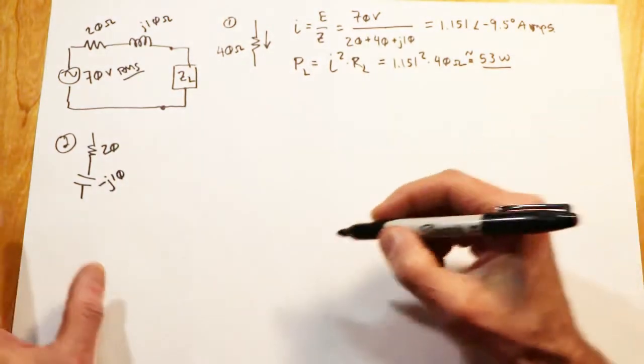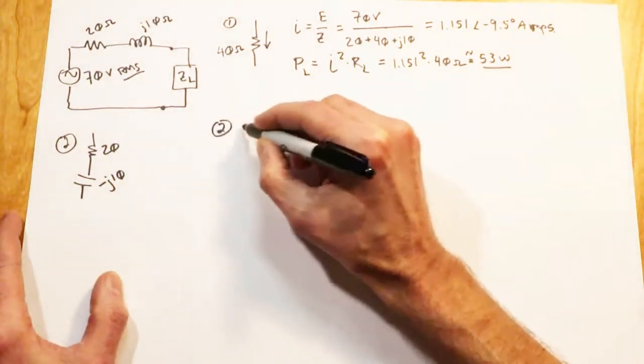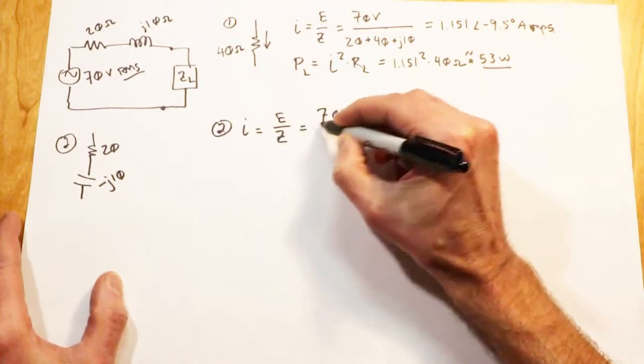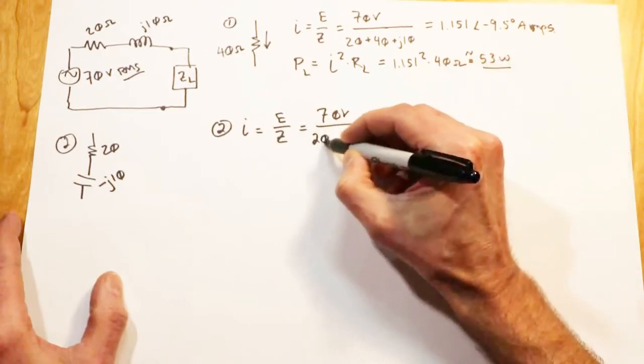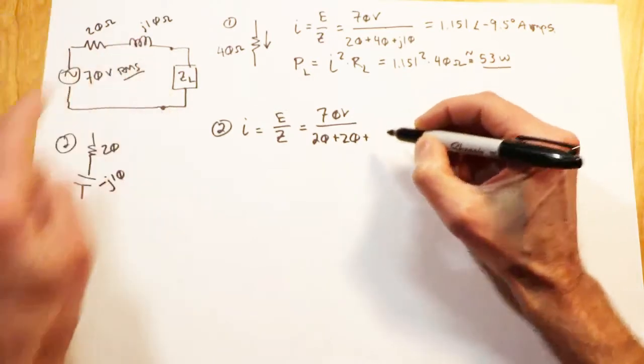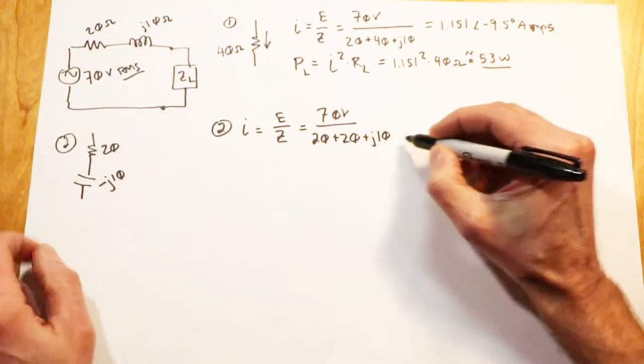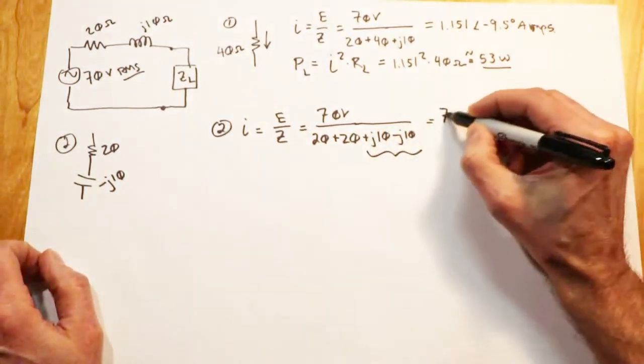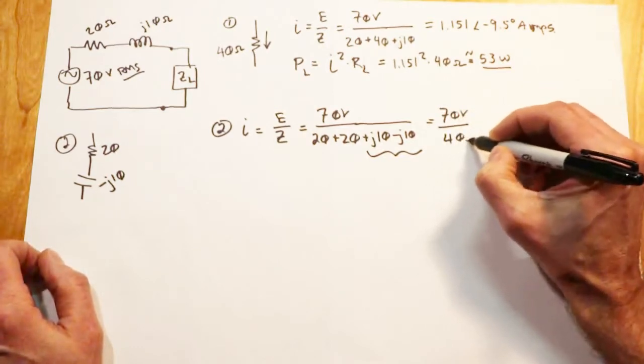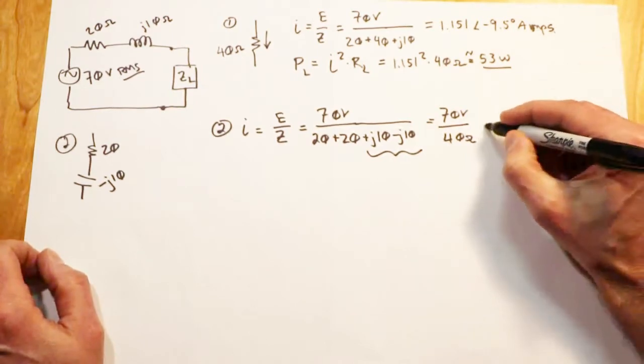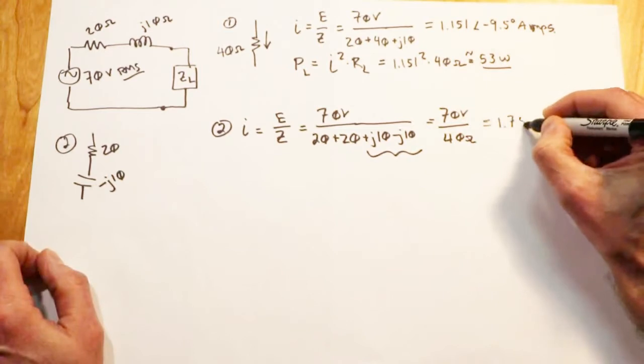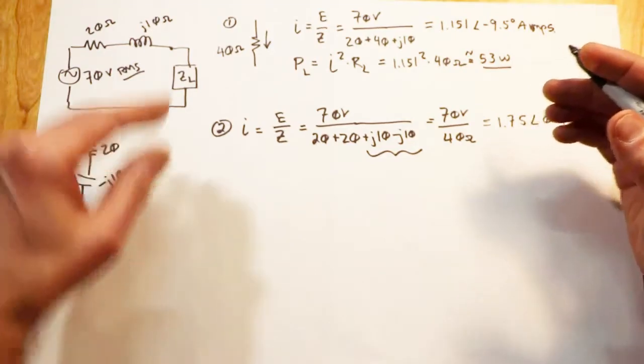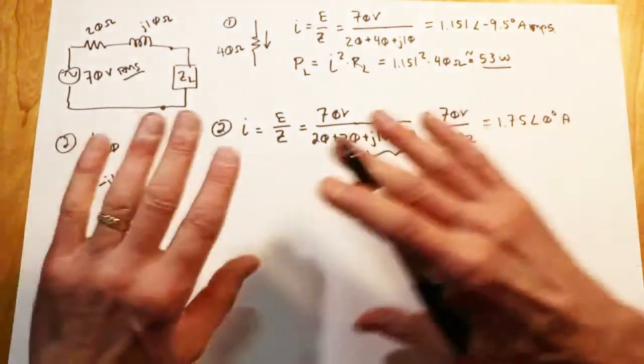Now when we figure out our current, it's still E over Z, still 70 volts, but now look at what you have. You've got a 20 plus this 20 plus this J10 plus this negative J10. Well these two guys cancel out, and what we're left with is 70 volts RMS sitting over 40 ohms. That's going to give us one and three quarters amps at an angle of zero. So it's purely resistive in this case. The inductive and the capacitive parts completely cancel. The circuit's purely resistive.